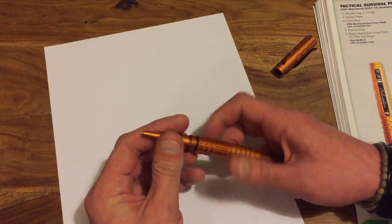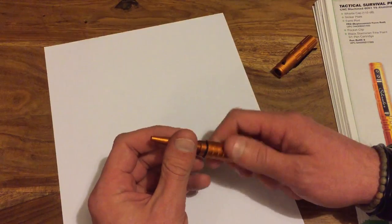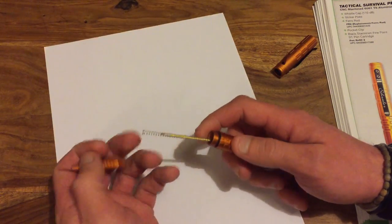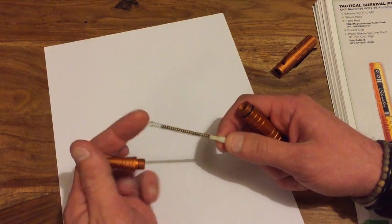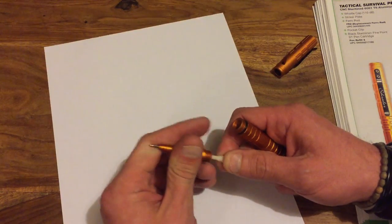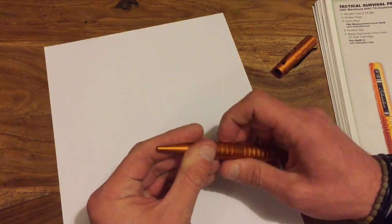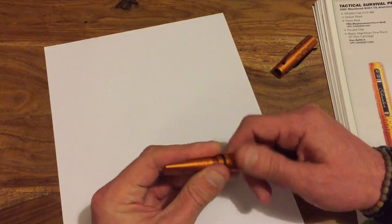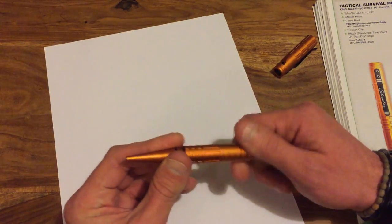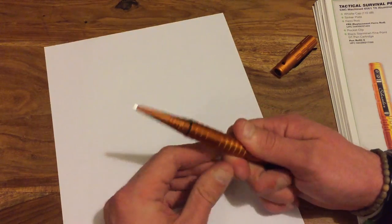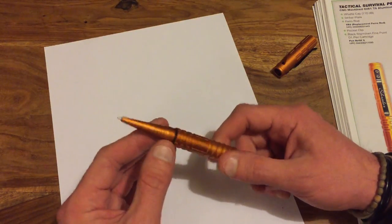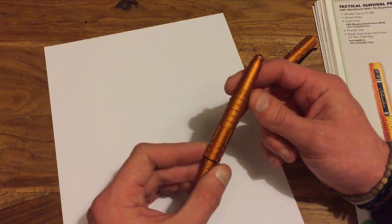Everything inside here is changeable, absolutely everything, from the ink cartridge. There's your little ink cartridge that you've got, you can buy the replacements either from Schrade or I think there's quite a few other places that do them. All does up, it's got O-rings on it and all types of stuff to keep it watertight.